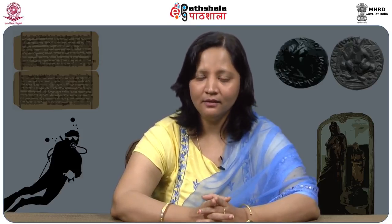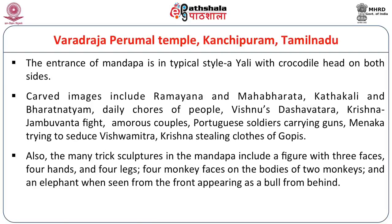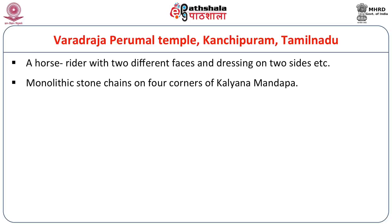It was during the Vijayanagara Empire period that the Portuguese came to India, and they entered into a strategic alliance wherein the Vijayanagara Empire received horses from them as tribute, and in return they allowed the Portuguese to use the ports that fell under their ambit. Many trick sculptures are also present in the Mandapa — one such sculpture is a figure which has three faces, four hands, four legs, and monkey faces with the bodies of two monkeys and an elephant when seen from the front, but appears like a bull from behind. Monolithic stone chains are on all four corners of the Kalyanmandap.